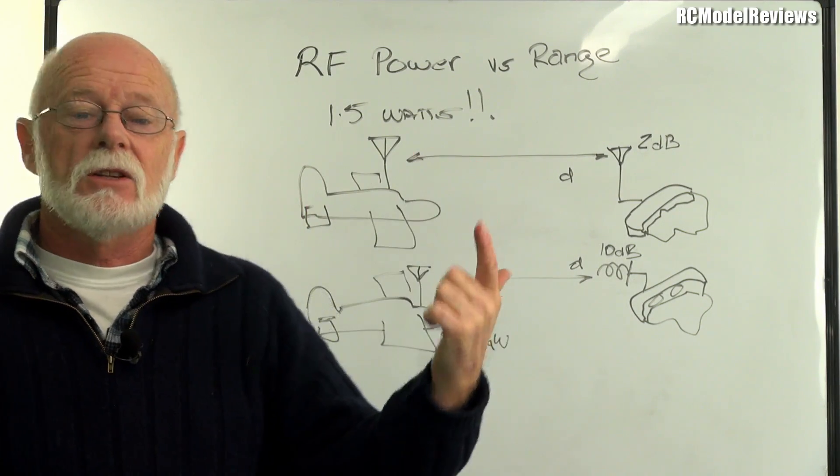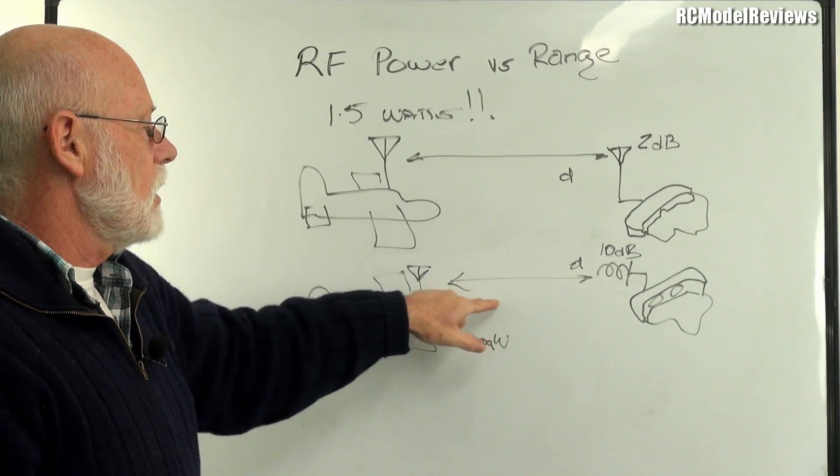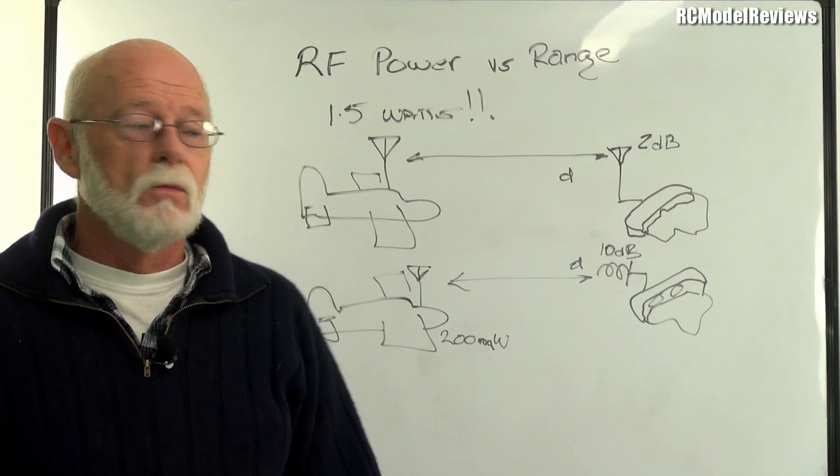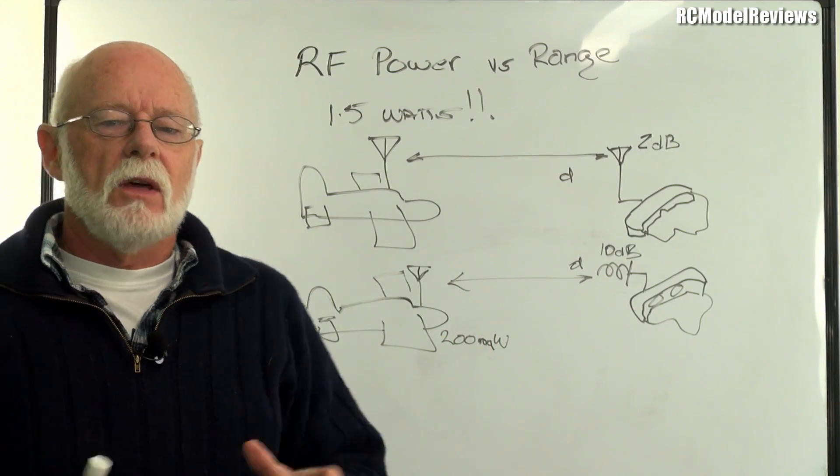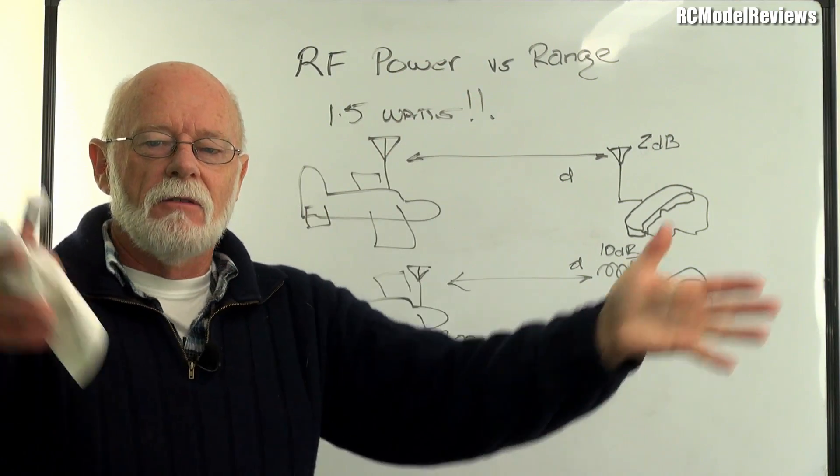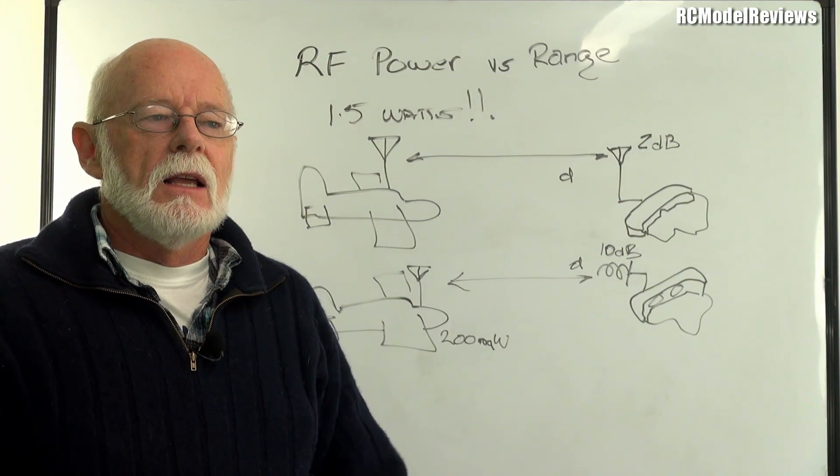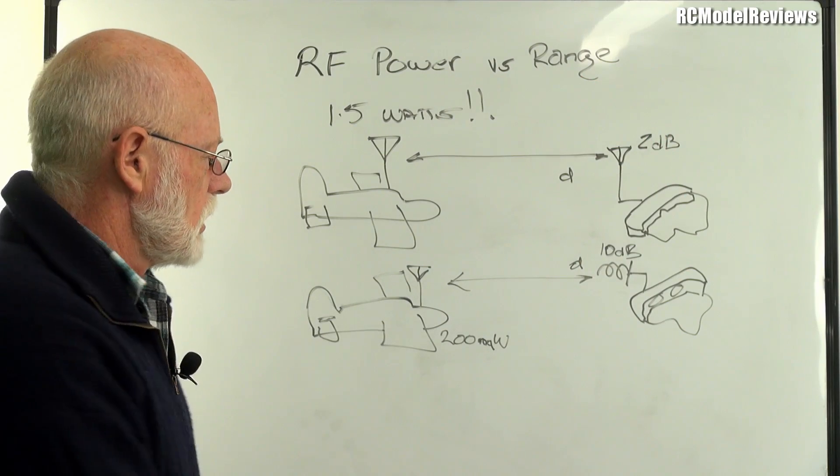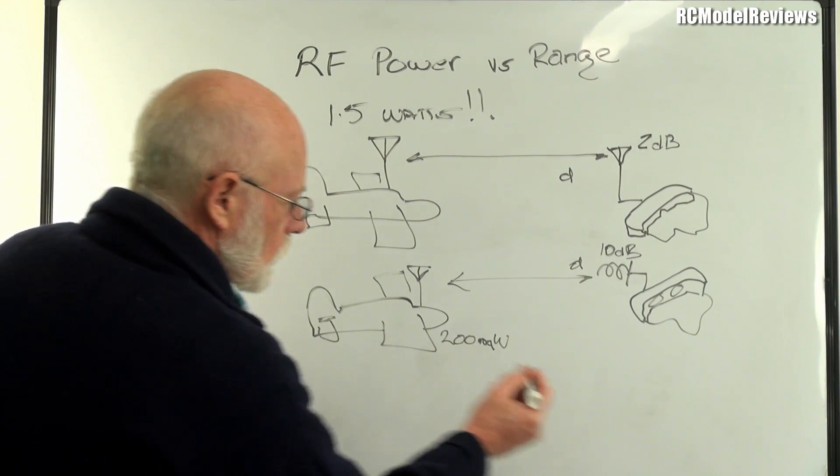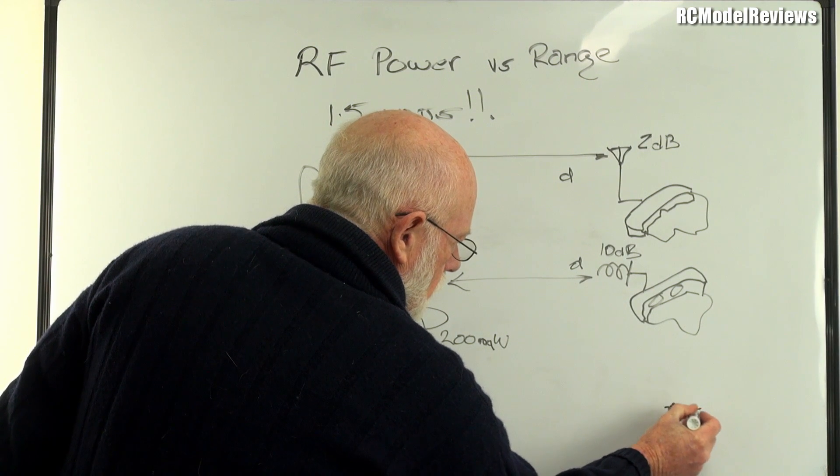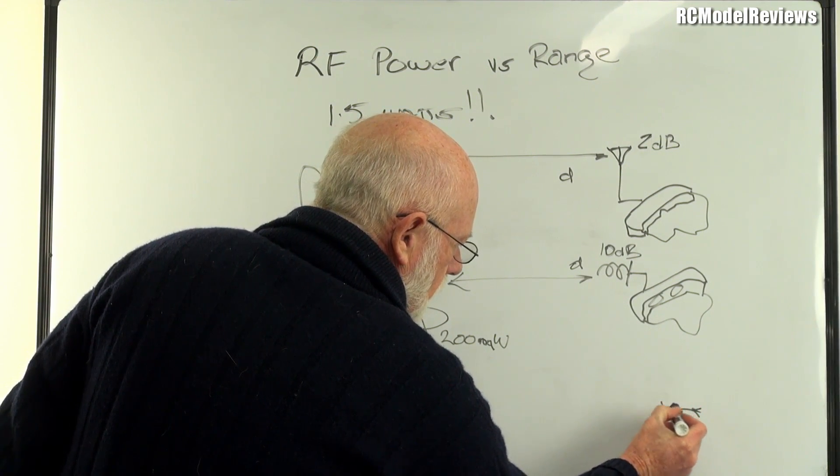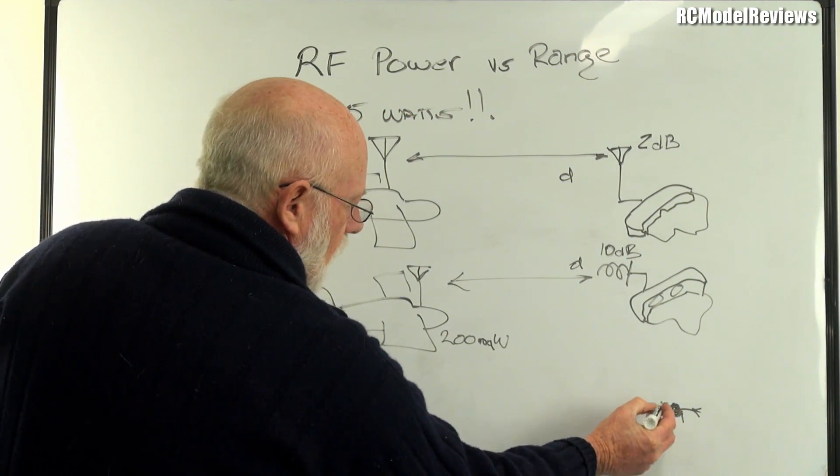And why would we go for antenna gain rather than power on the model? Why would we use a 10 dB antenna and a 200 milliwatt video transmitter rather than a 1.5 watt transmitter and a 2 dB antenna omnidirectional? Well, it's simple because there are many benefits to be had from the setup. There are downsides. First downside, you've got to have this antenna pointed at the model or you're not going to get as far. But that's not so difficult because antennas, although they are directional, it's not like a laser beam. They do have a field, a width.